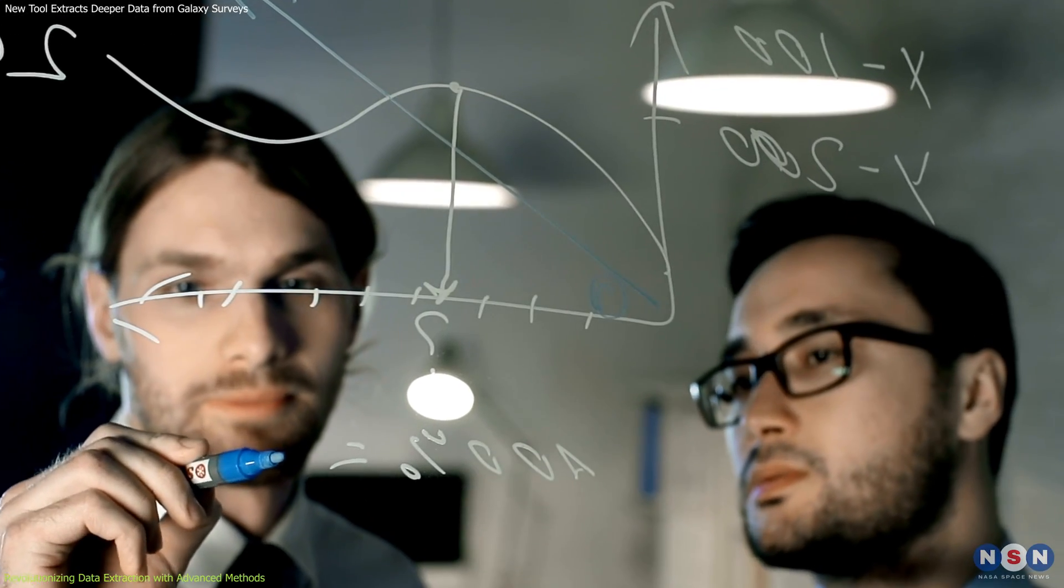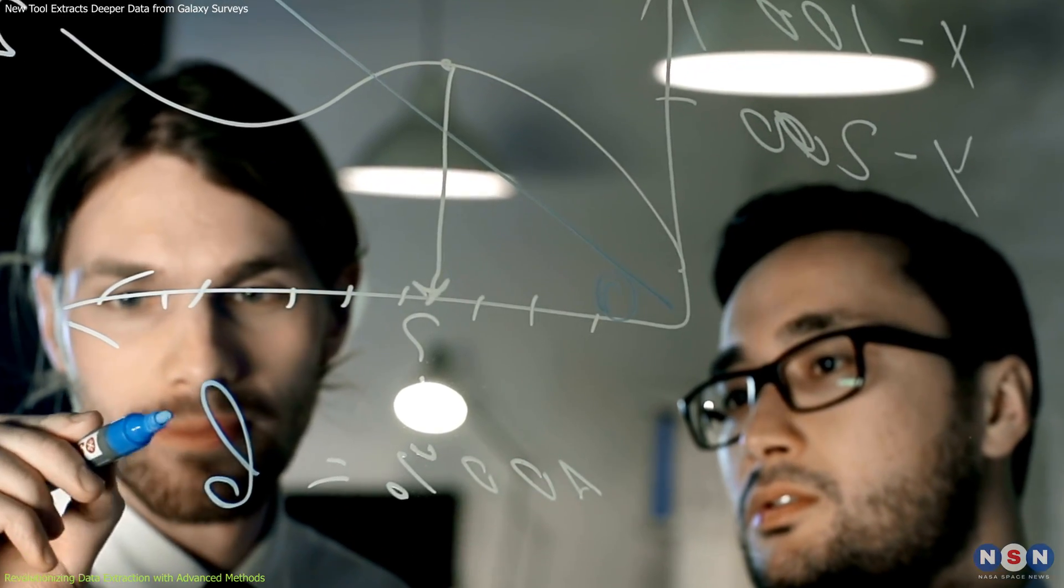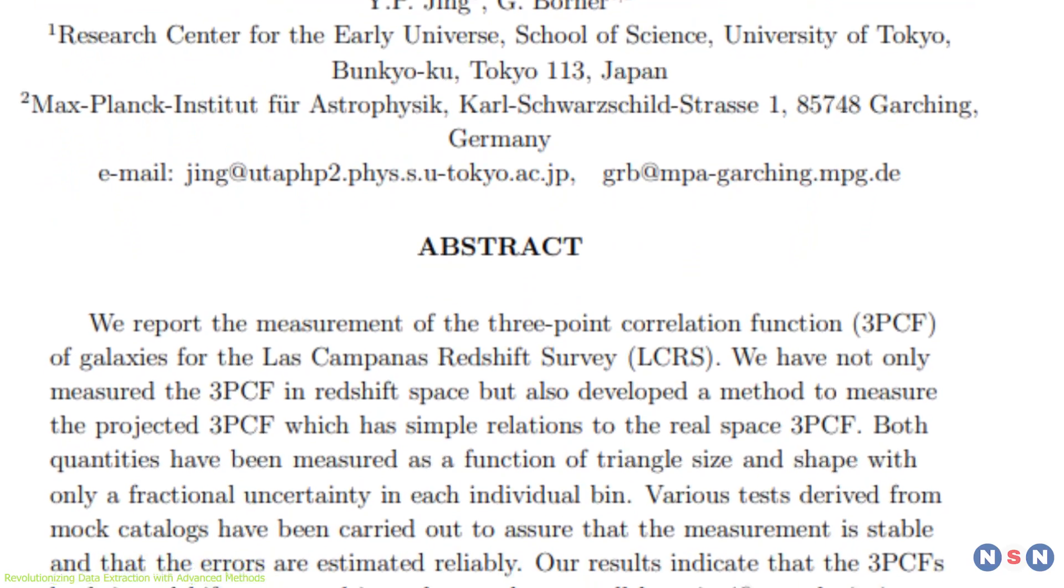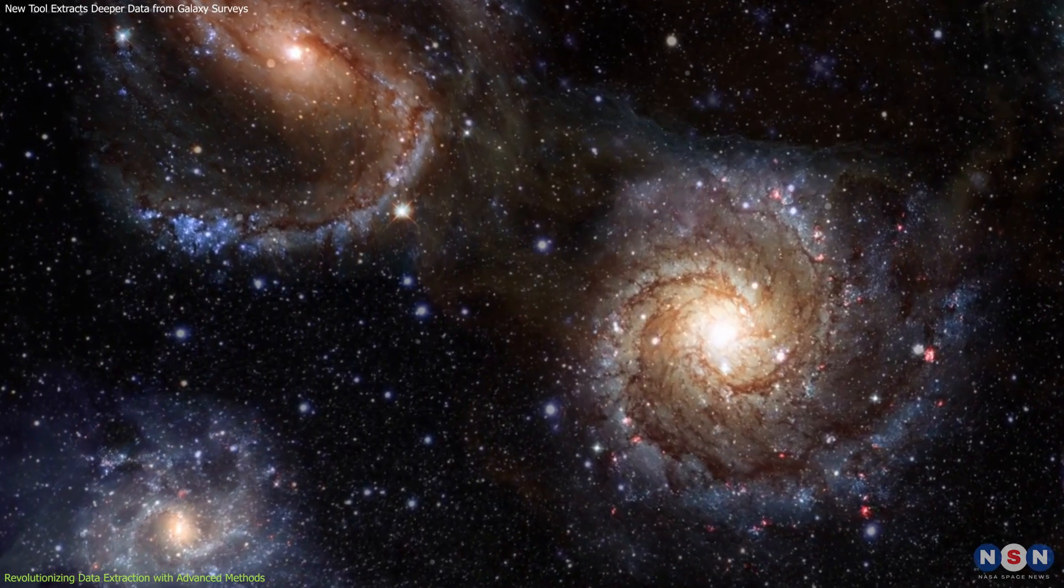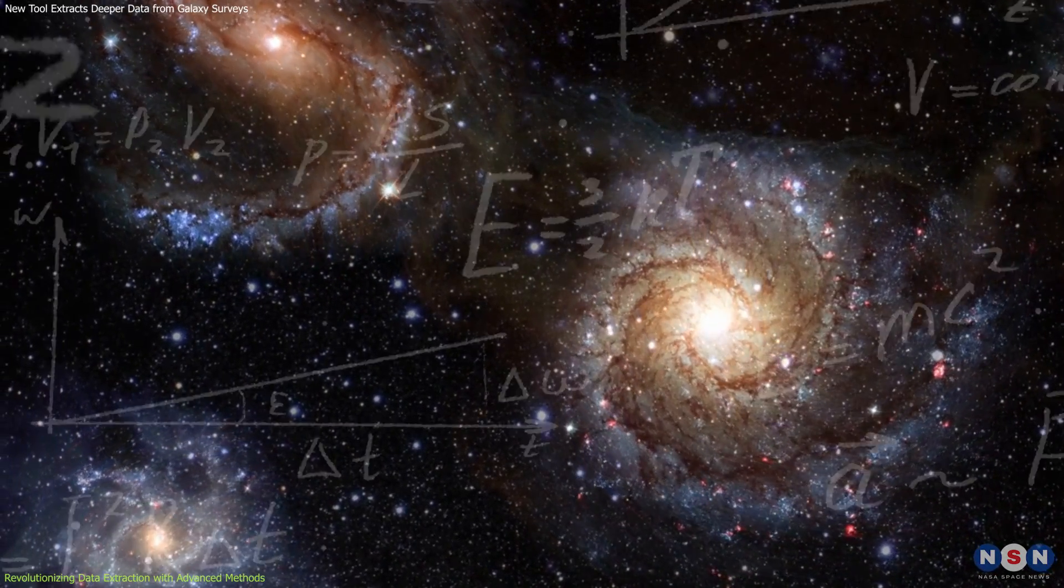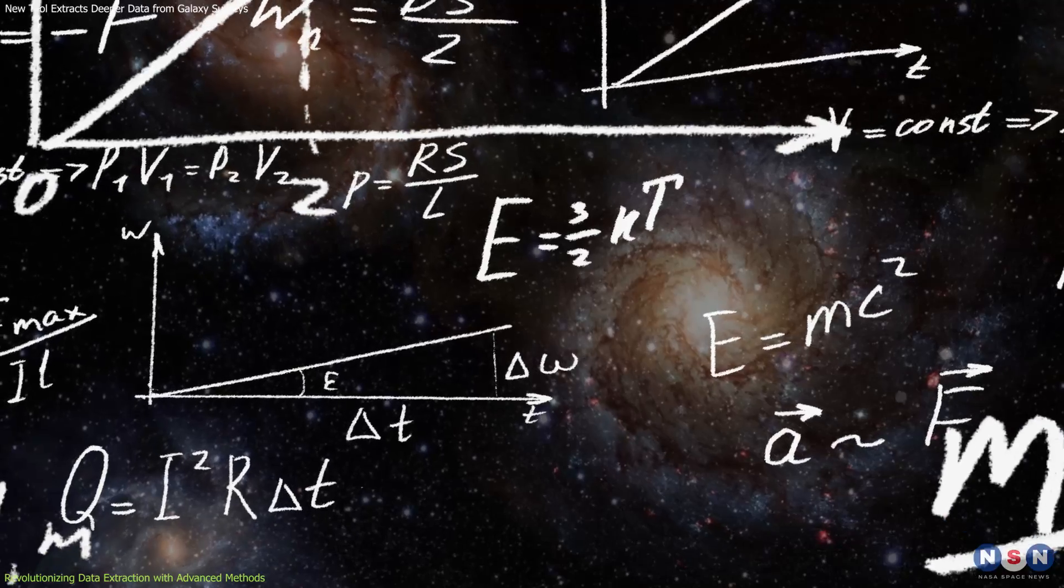Researchers have developed methods to explore higher-order correlations, such as three-point and four-point functions. These functions examine the relationships among triplets and quartets of galaxies, providing a deeper understanding of the underlying physics, including the properties of dark matter and the dynamics of galaxy clustering.